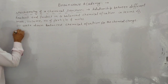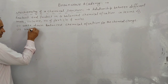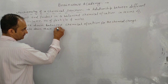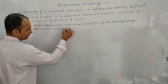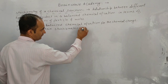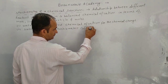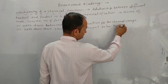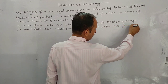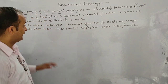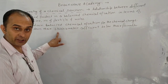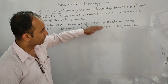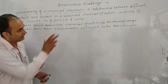Second step: write down their stoichiometric coefficients below their formula. For whatever reactants and products you have, write their stoichiometric coefficient below the formula of each reactant and each product.